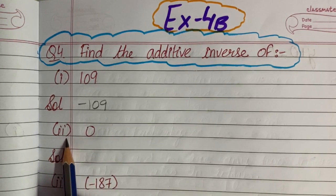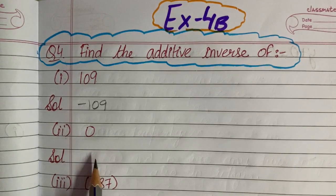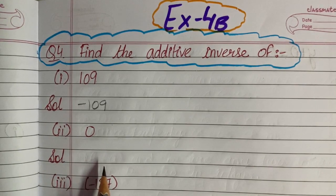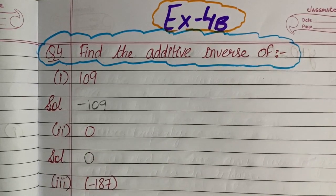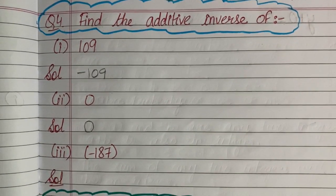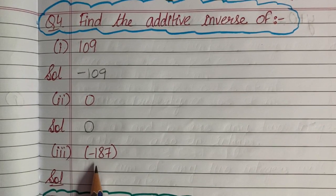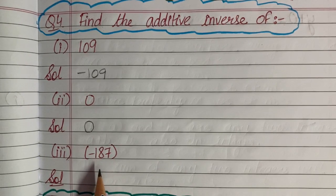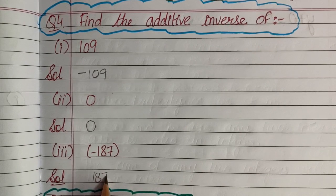Now the second part asks for the additive inverse of 0. Since 0 is neither positive nor negative, the additive inverse of 0 will be 0 only. Now the third part asks for the additive inverse of minus 187. Here the number is negative, therefore its additive inverse will be positive — the additive inverse of minus 187 will be 187.